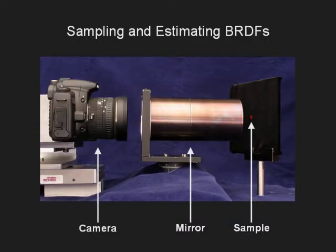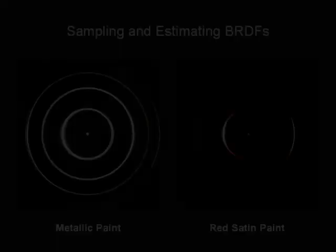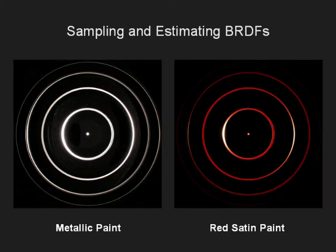This system uses a cylindrical mirror to capture a sample point from a large number of viewpoints in a single image, by making use of interreflections within the mirror. Images of small circular patches with metallic and red satin paints, illuminated by a distant point light source, are shown here. Notice that the samples are imaged along four circles, implying that they are observed from four circular loci of virtual viewpoints.